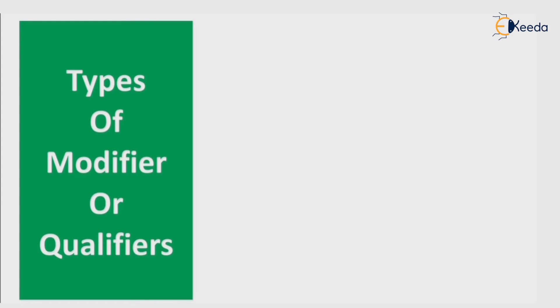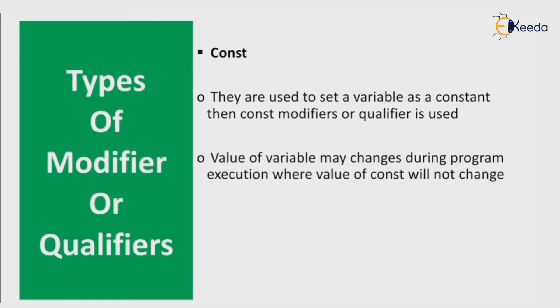The next type of modifier or qualifier is const. They are used to set a variable as a constant. When const modifier is used, the value will not change during program execution. To define const: const data type variable equals value. For example, const int a equals 10 means we are assigning value 10 to a, and it is of int data type, so it remains constant during program execution.